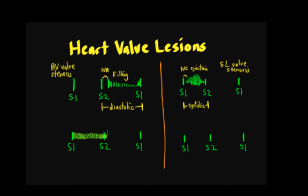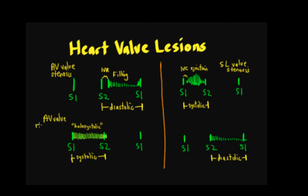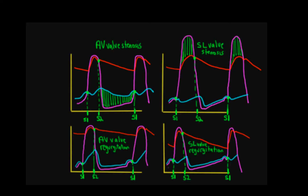In the lower left, the murmur starts at S1 and continues all the way through, even going a little past S2 — a systolic murmur that extends slightly into diastole. The term holosystolic or pansystolic describes this kind of murmur, with a fairly consistent intensity throughout. In the lower right, the murmur starts at S2 and goes all the way through, possibly even past S1 — a diastolic murmur. The lower left is AV valve regurgitation and the lower right is semilunar valve regurgitation. These are visualizations of murmur intensities aligned with the timing and pressure gradient profiles on the Wigger's diagram.